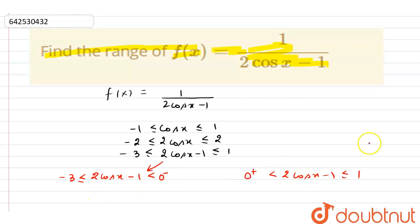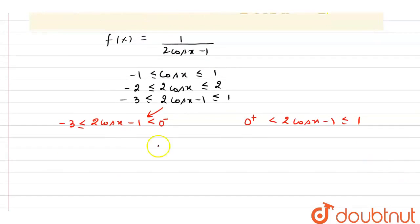If I reciprocate it, then I'll get 1 by 2 cos x minus 1, and the value gets reversed and the sign of inequality also gets changed.